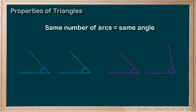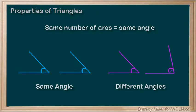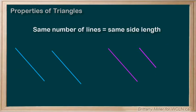The same arc in two angles shows us that they are the same. For example, the pair of angles on the left are the same. The pair of angles on the right are not the same. We show that sides are the same length by marking them like this. For example, the pair of sides on the left are the same length and the pair on the right are not.